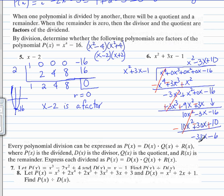We can't continue anymore because the power here, the exponent, is less than the exponent of our divisor. So we stop now. Since this is not equal to 0, x squared plus 3x minus 1 is not a factor of the original polynomial x to the 4th minus 16.